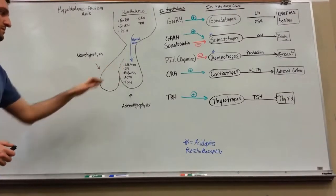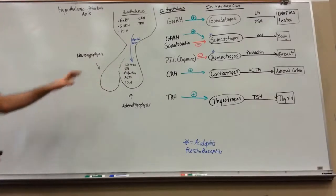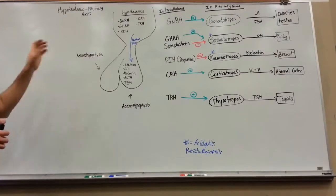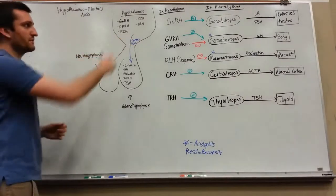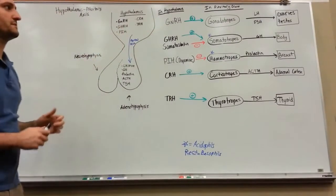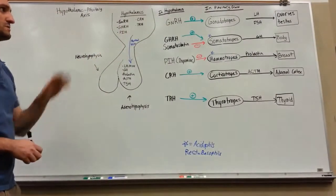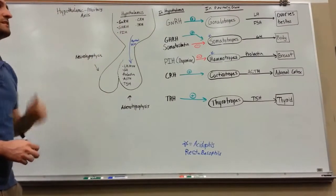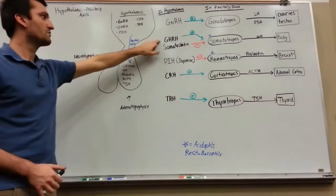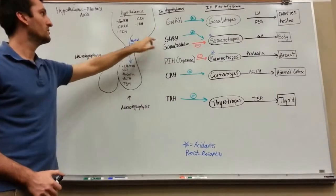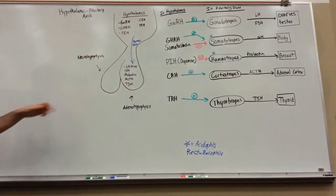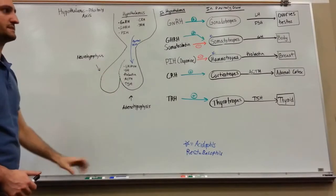These five hormones will be released into the system based on the influence of the hypothalamic hormones. Gonadotropin-releasing hormone positively stimulates those gonadotropes, which release LH/FSH, which then goes on to the target organ. Growth hormone-releasing hormone will travel down through the portal vein, act on those somatotropes, and secrete growth hormone down into the system.